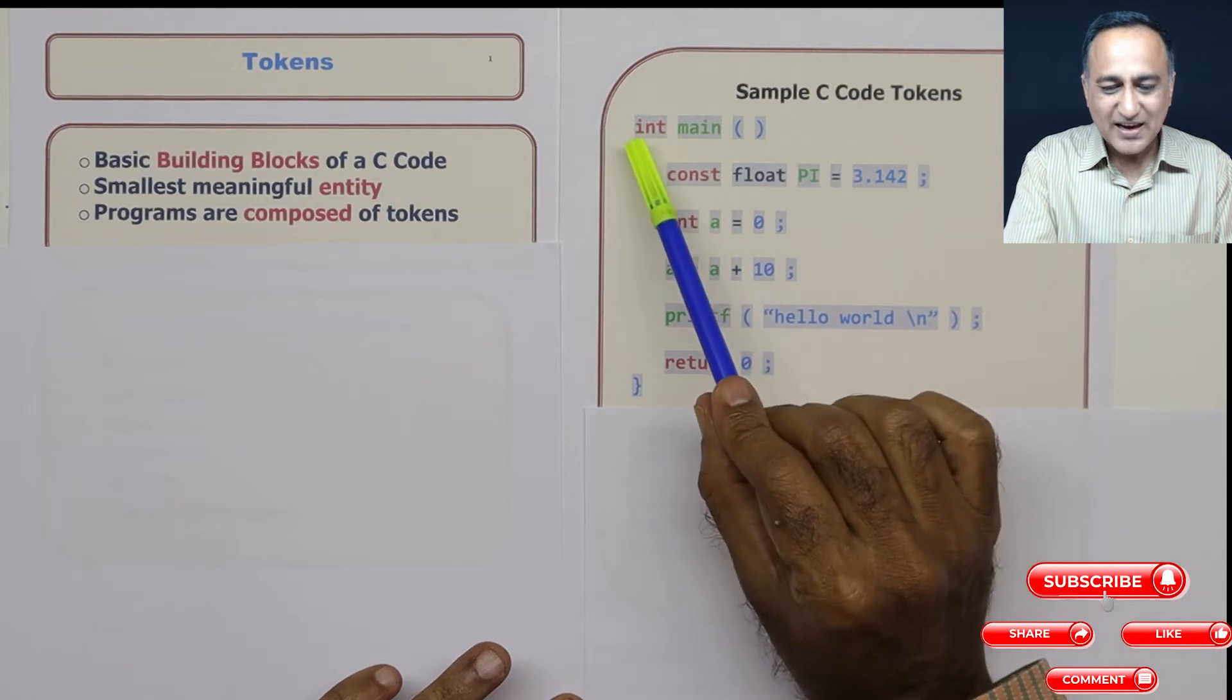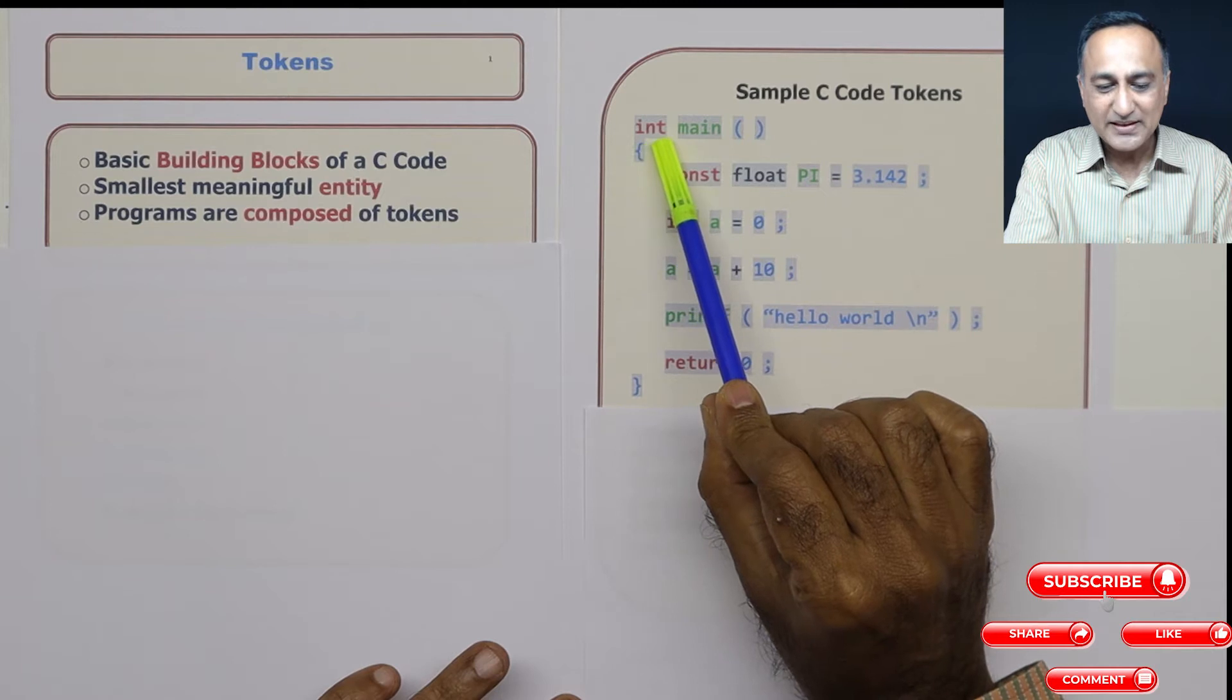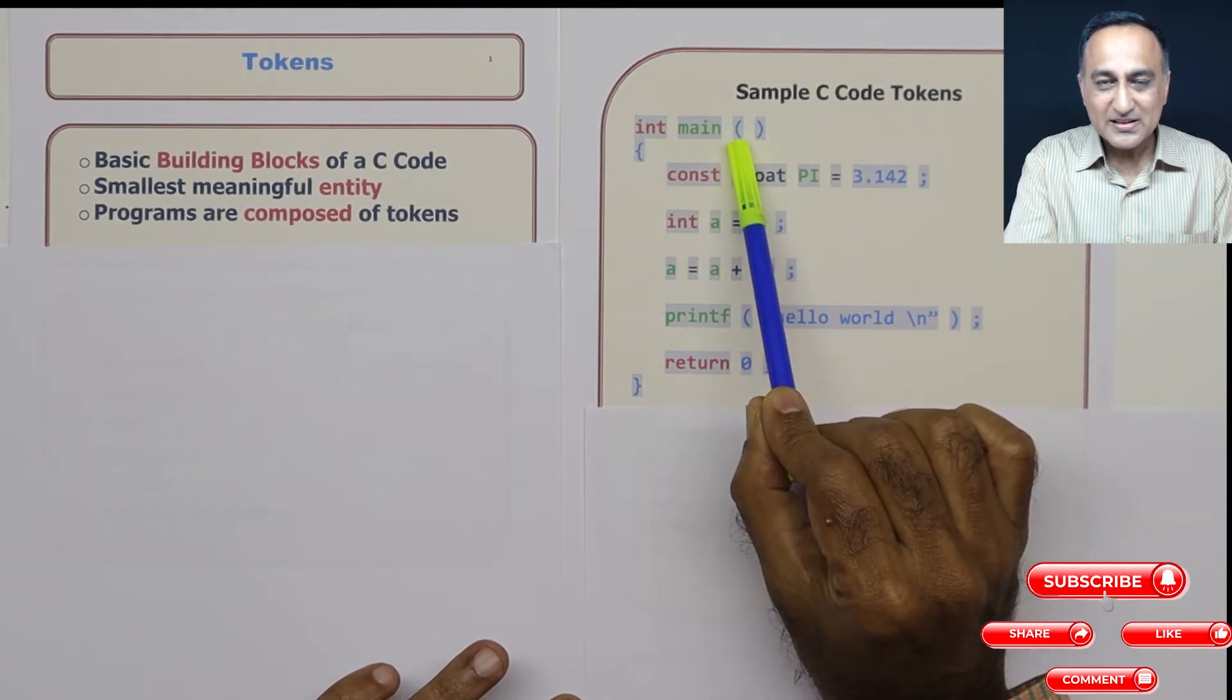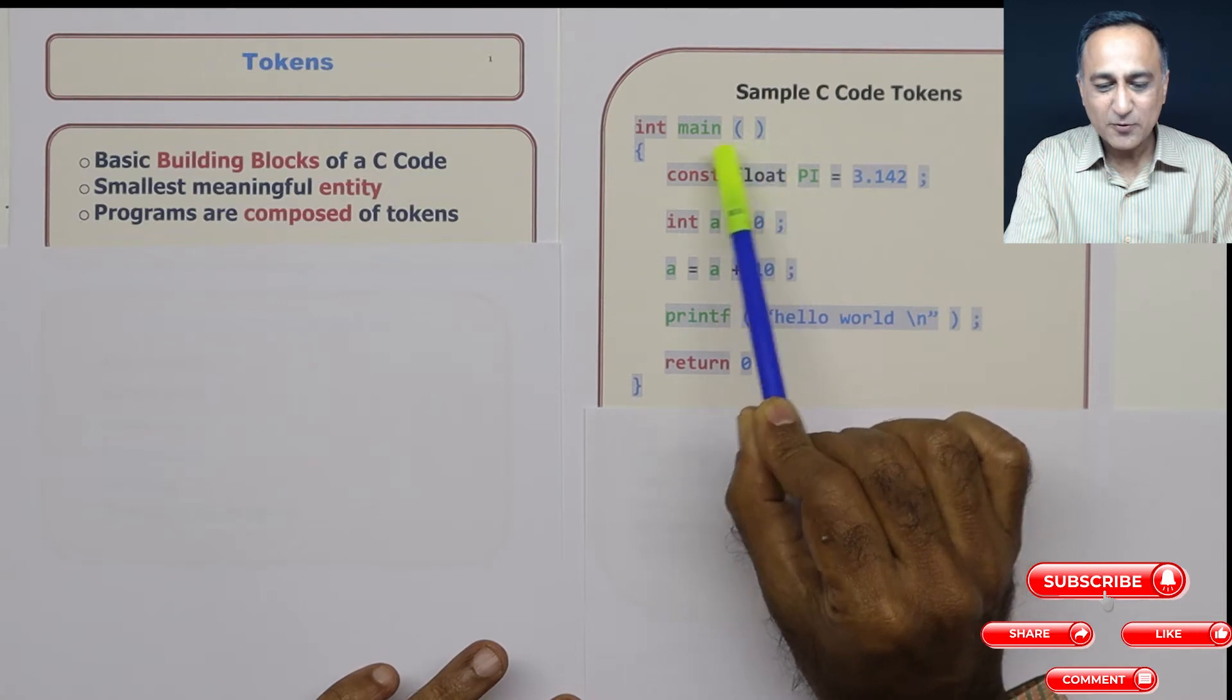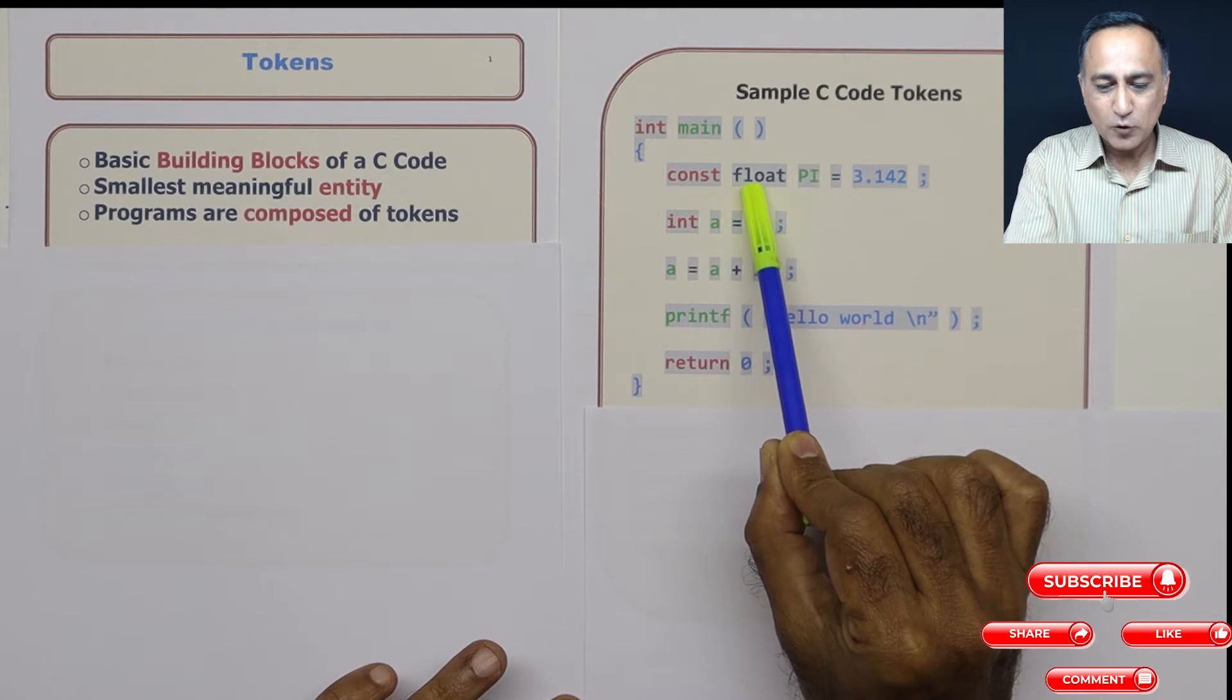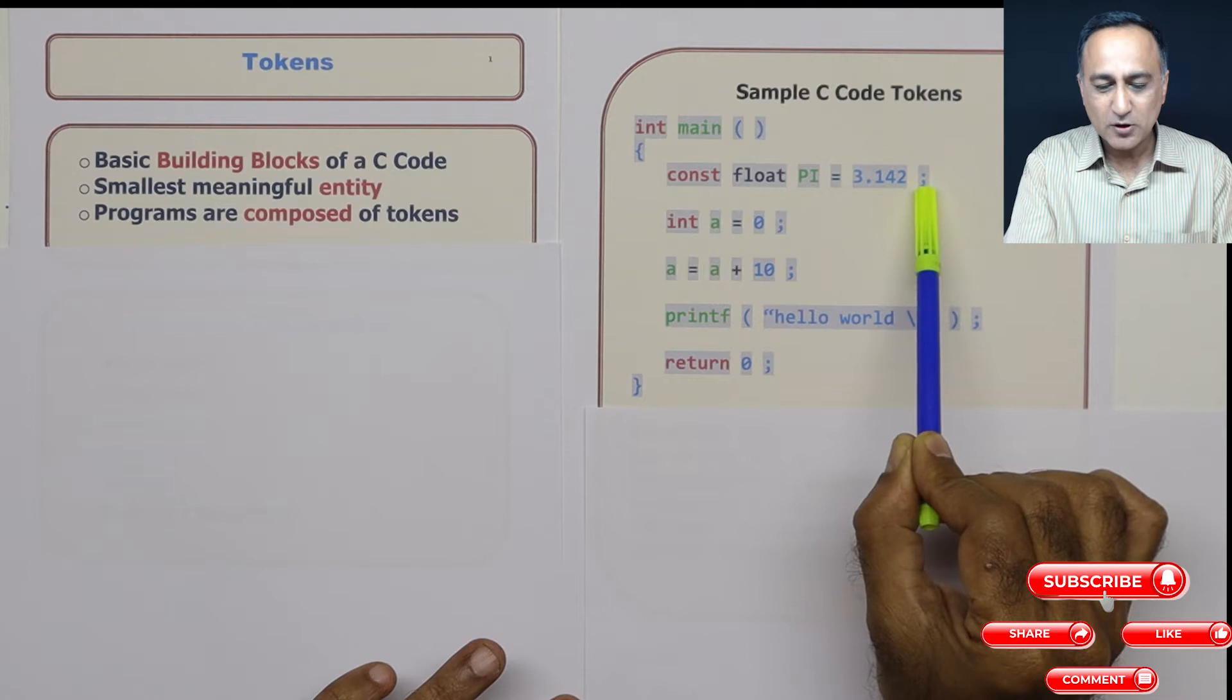If you see the highlighter, each of the highlighted items in gray indicates one token. int is one token, main is the second, round parenthesis is the third, this is the fourth, the fifth, const float